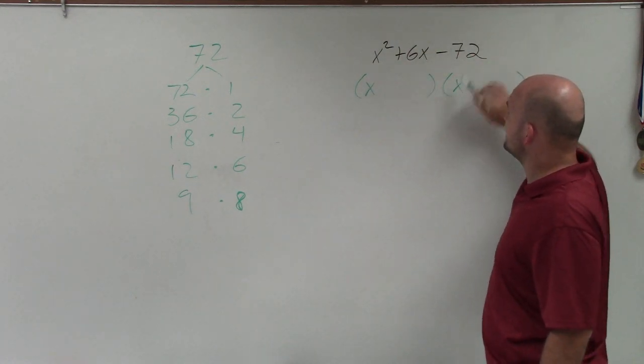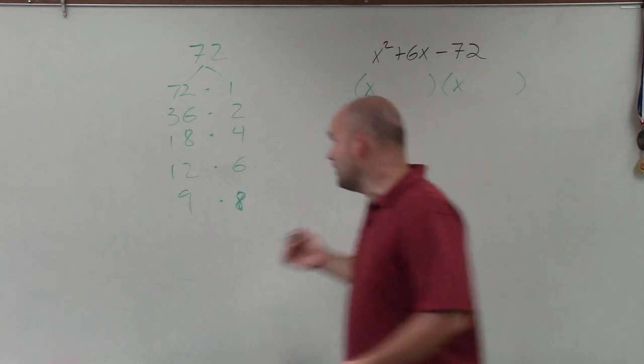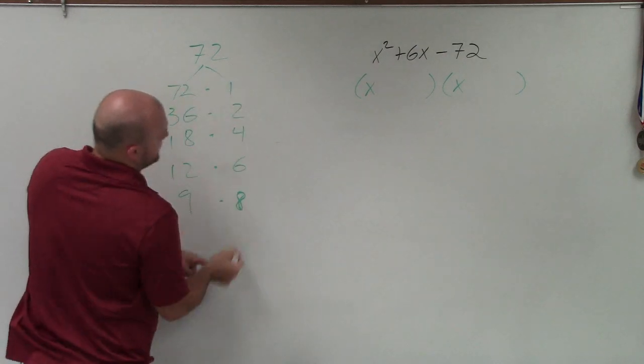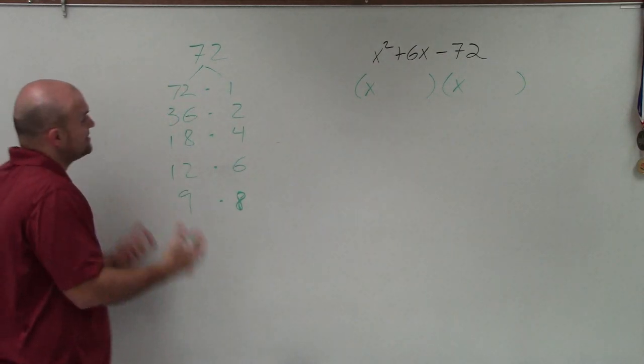So if we have x times x now, one of these numbers, to give us negative 72, that means one of them has to be negative. So I can make all of these negative over here, or I can make all these negative. It doesn't matter. One of the factors has to be negative.